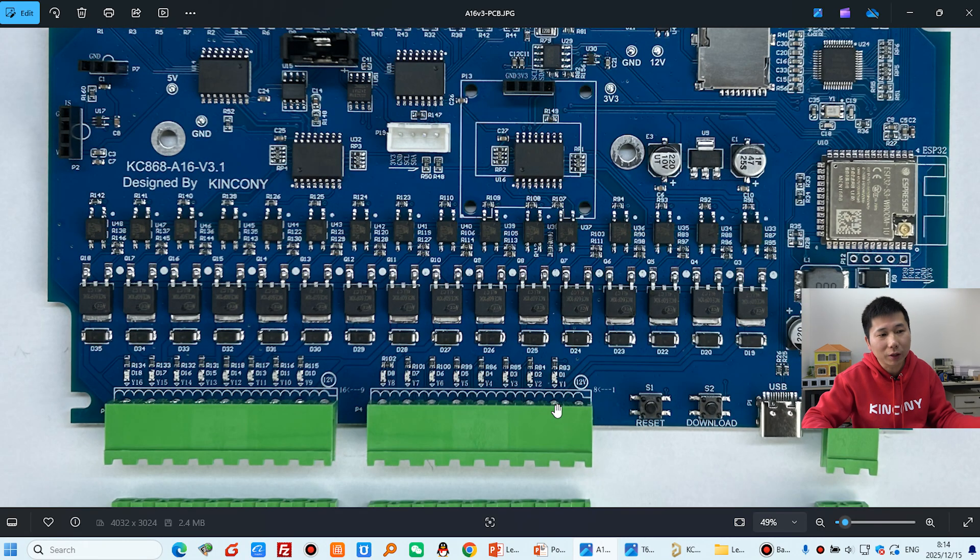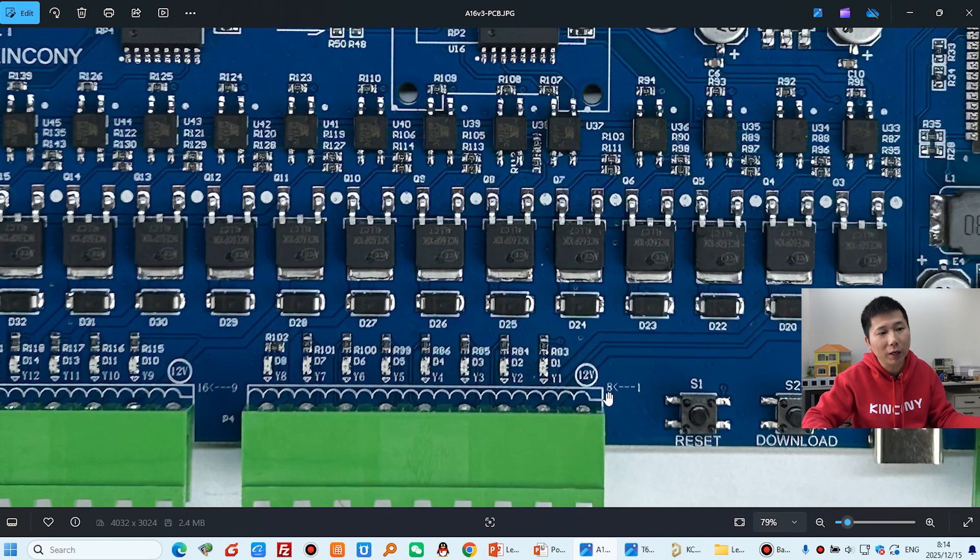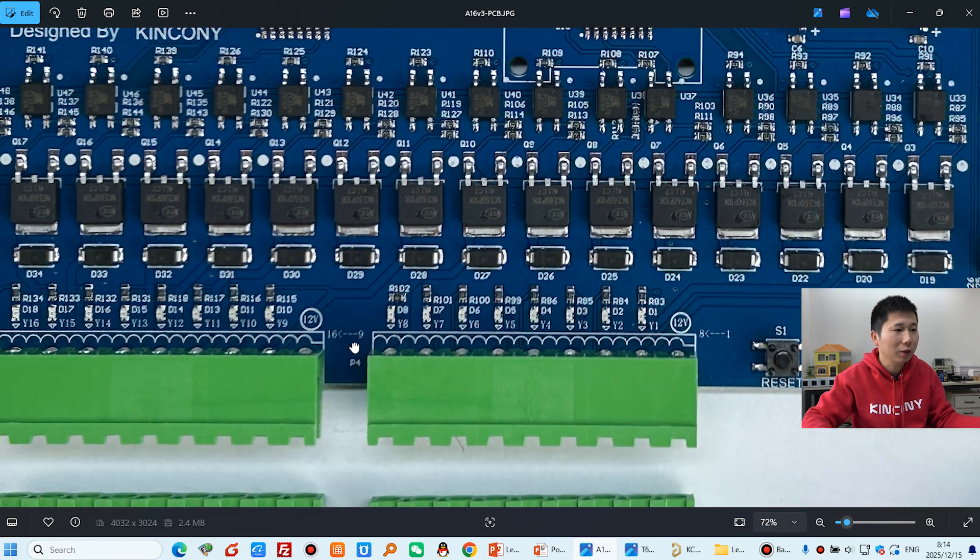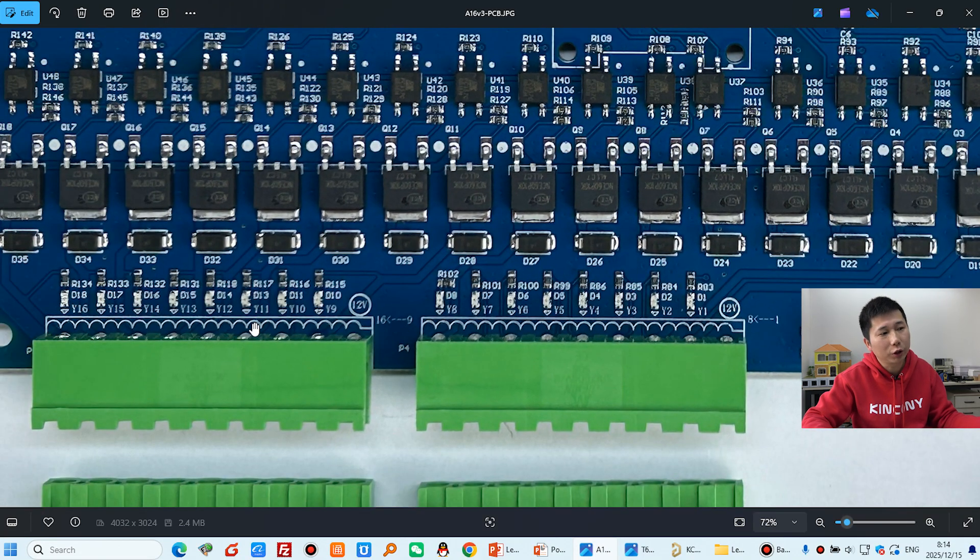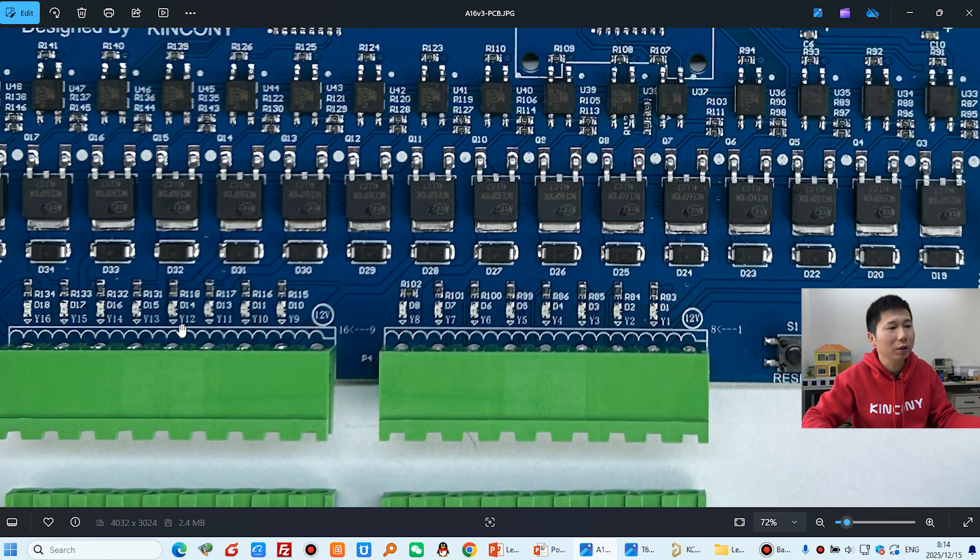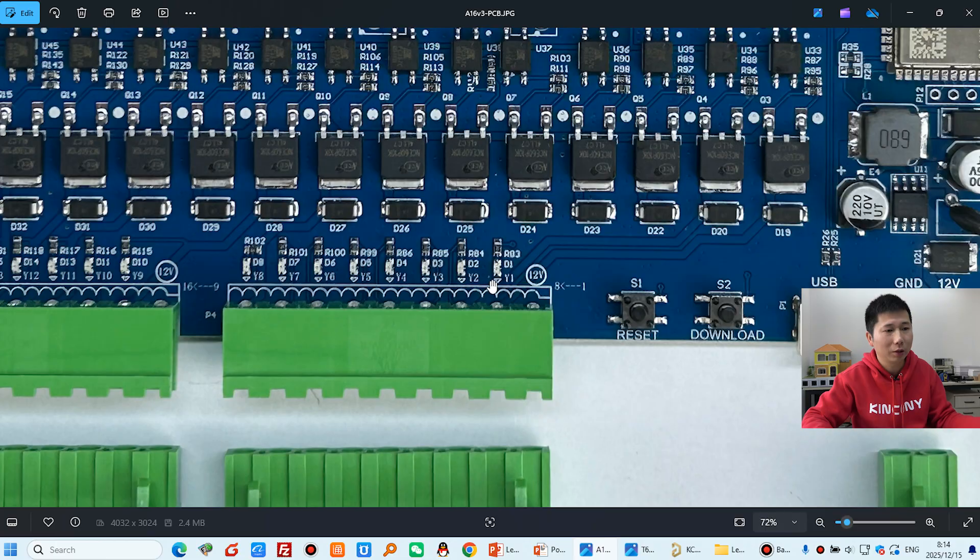And this output, you can see, this is a 1 to 8 channel output, and this is 9 to 16 channel output. Because these two output terminals have the same principle, so we can see only this one. 8 channel, this has a common, this has Y1, Y2, Y3, Y4, until Y8. So we can look at our PowerPoint.